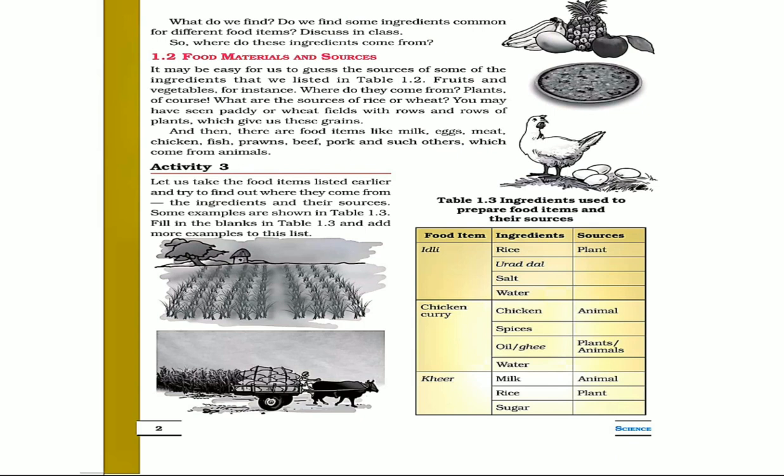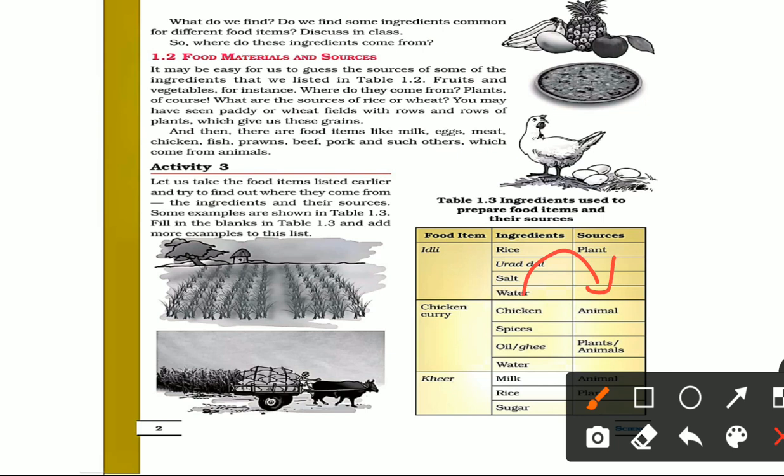Another food item is chicken curry. The ingredients for chicken curry are chicken, spices, oil or ghee, and water. Chicken is an animal product. Spices like turmeric and coriander are plant products.